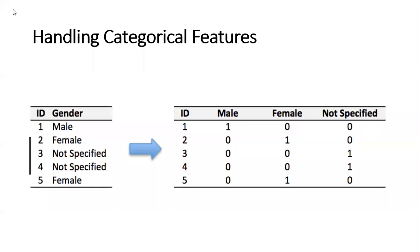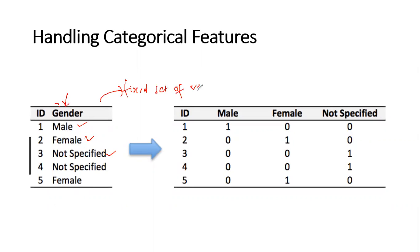Category features - whenever you see a dataset, some of the features, if I take an example of gender, in gender you may have seen that you have different types of categories like male, female, not specified, and all the other records will basically be repeated by these. So some of the properties are that you will be having some fixed set of values in all the records - it will be either male, female, or not specified.